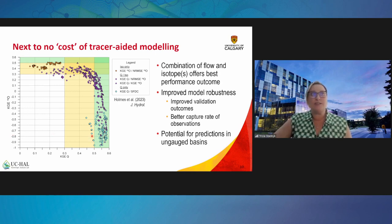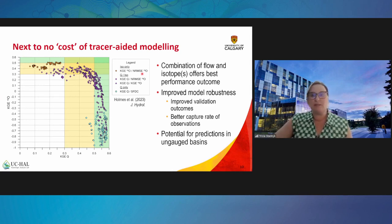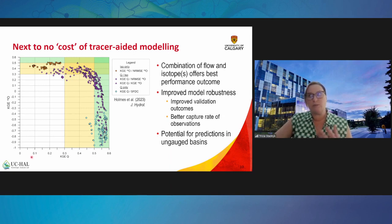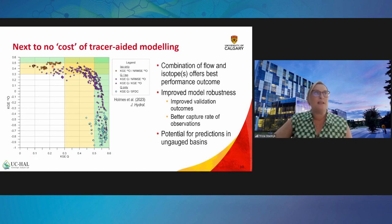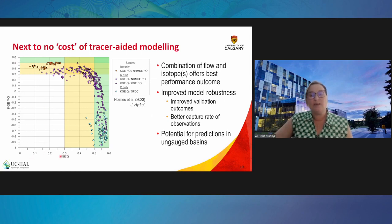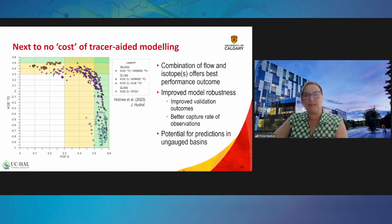We also ran a scenario where we pretended we didn't have any flow data and calibrated the model only using isotope data, then checked how well it performed in terms of flow. This is a scenario where we have isotope data in an ungauged basin. It's not the greatest, but it does perform well isotopically and gives a KGE value that is decent and respectable for large-scale modeling. These isotopes also offer potential for predictions in ungauged basins.